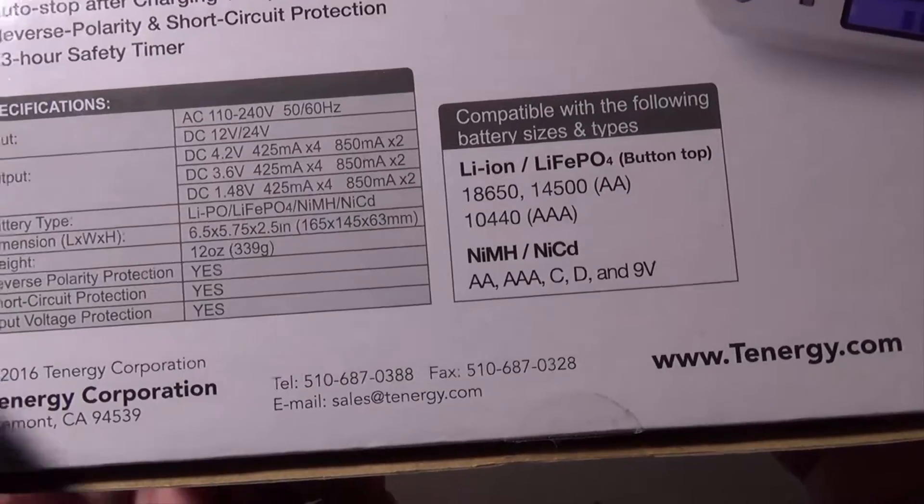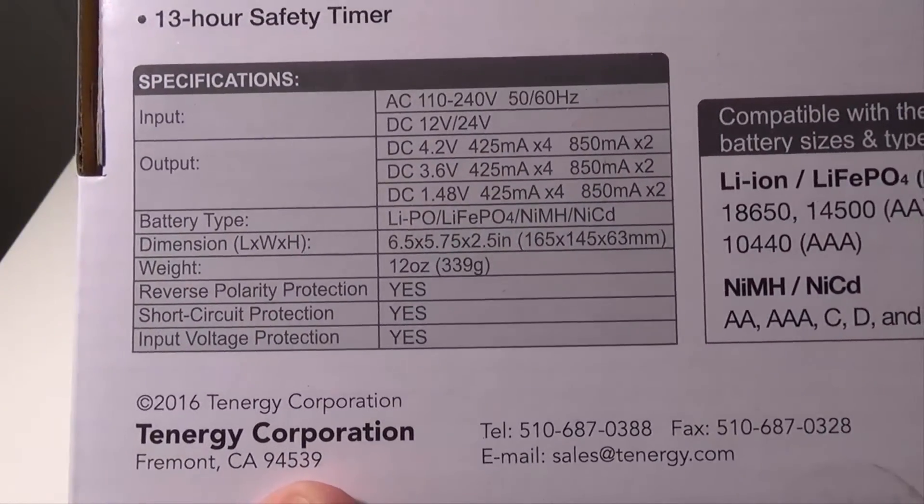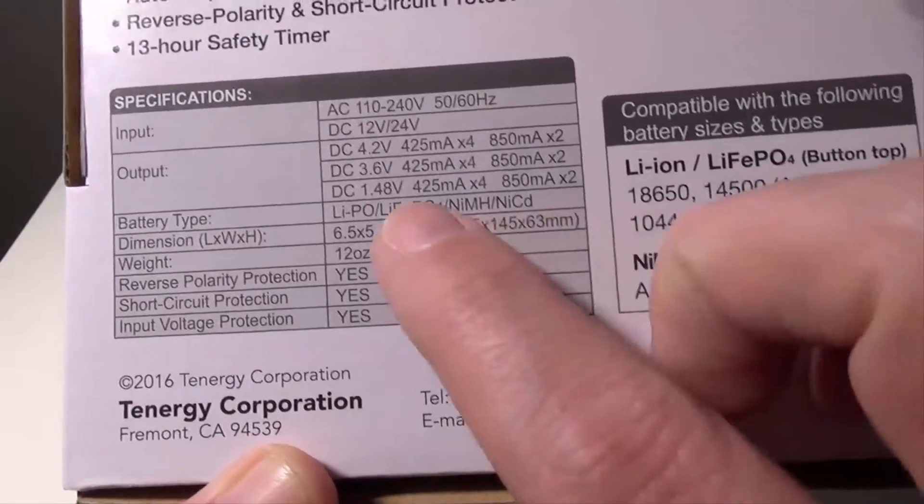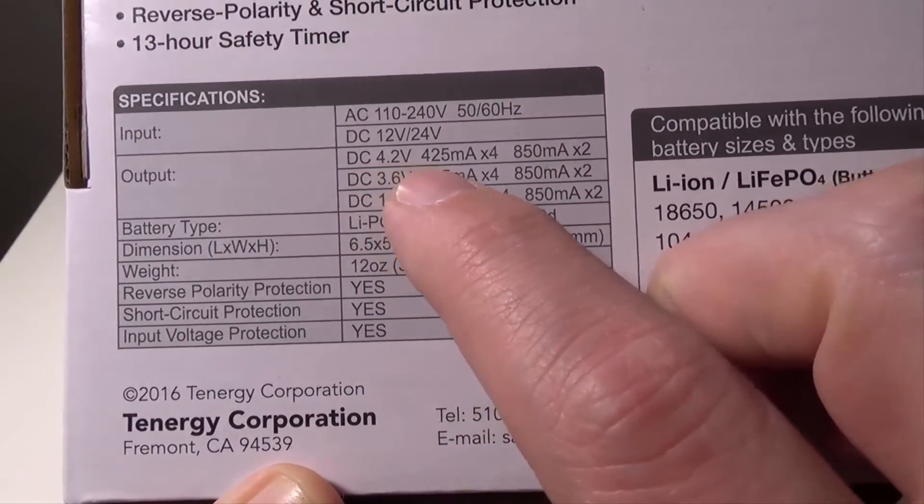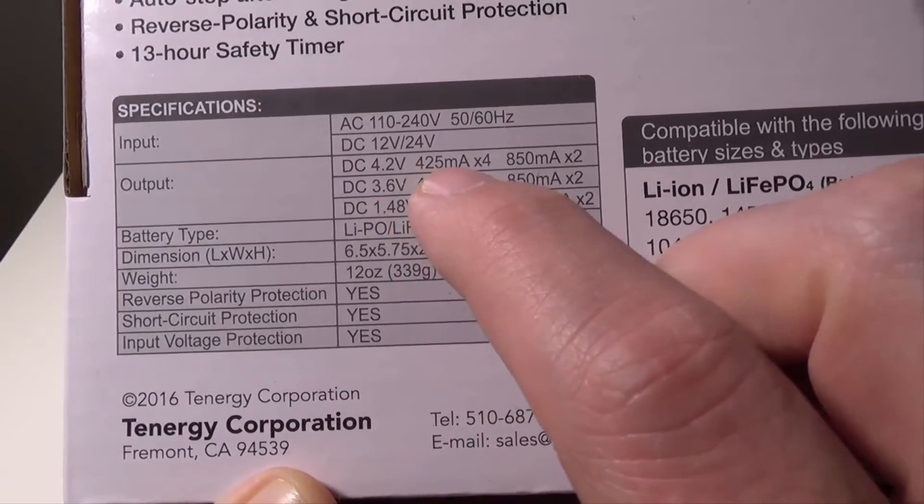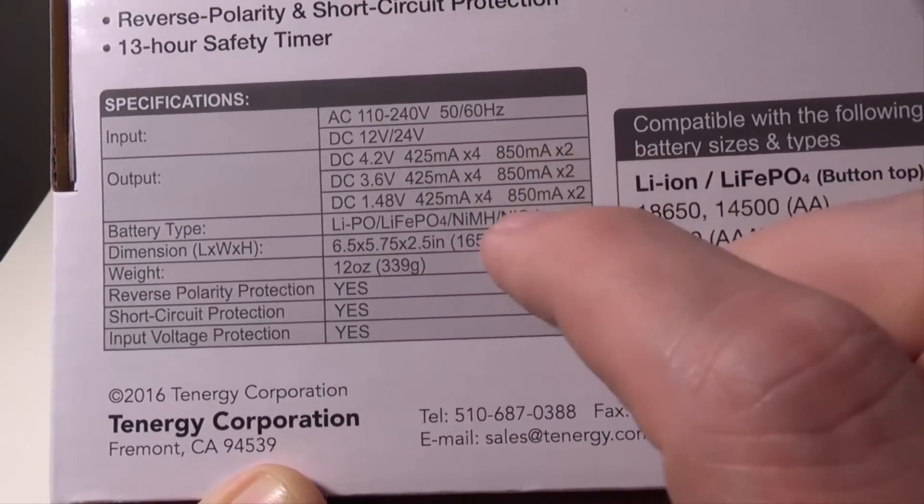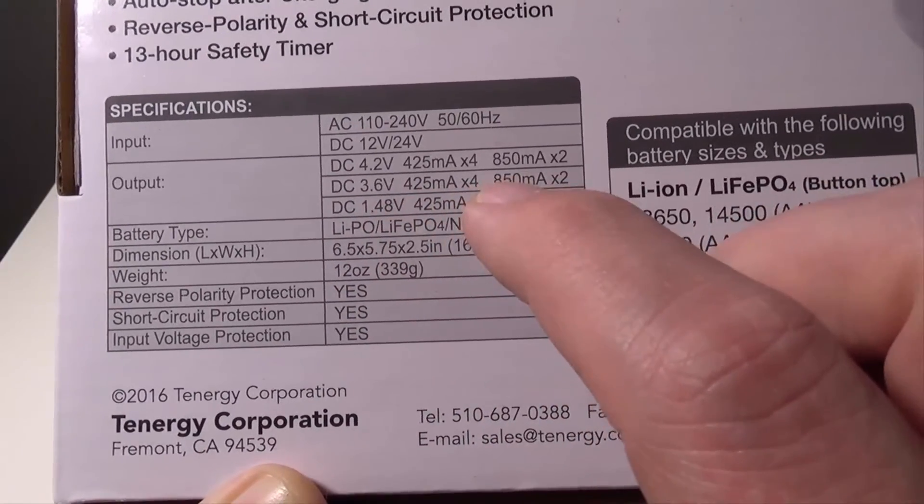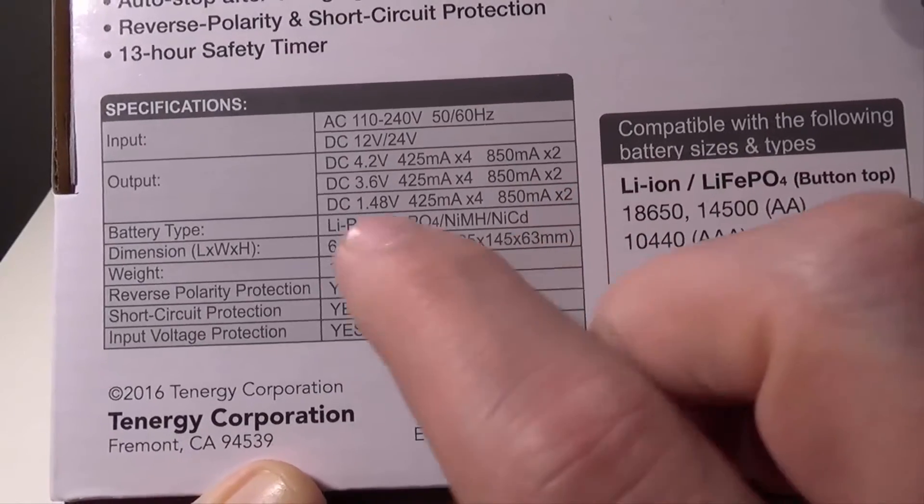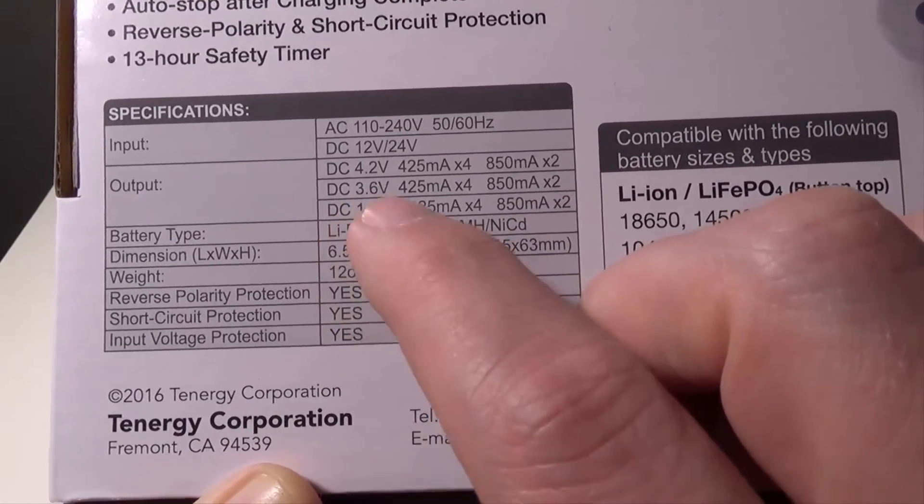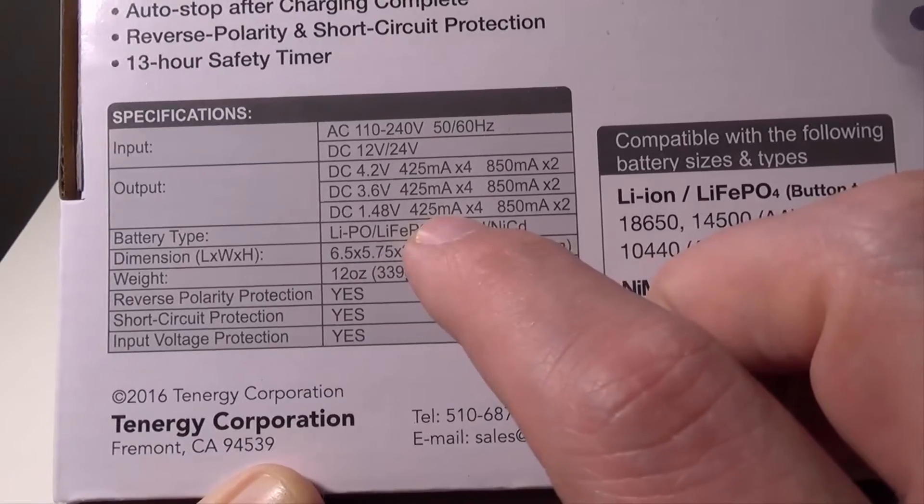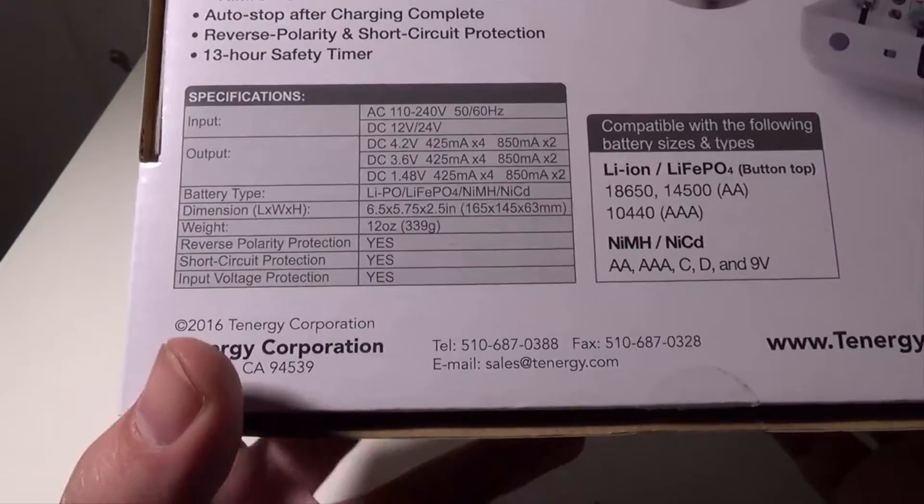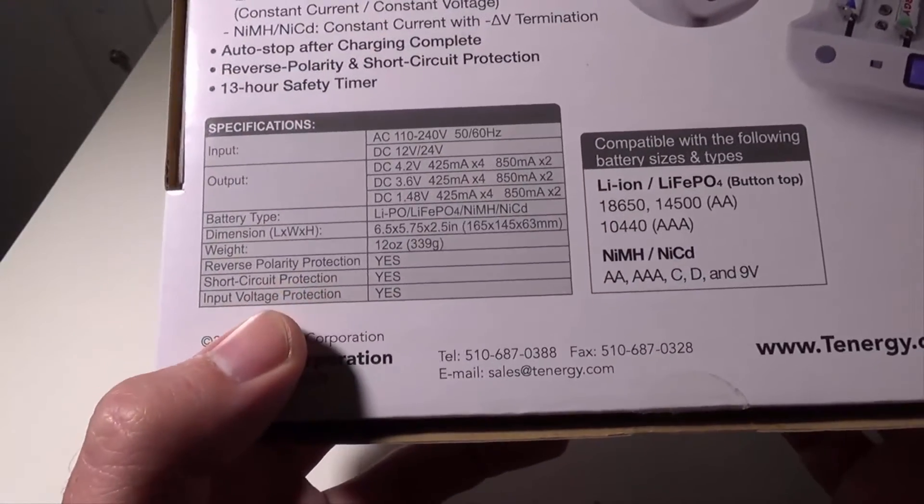Your output is going to be depending on what batteries you're doing, and I will leave this up here if you want to look for your specific battery type. You've got your DC 4.2 volt, 520 milliamps times 4, 850 milliamps times 2. DC 3.6 volt, 425 milliamps times 4, 850 milliamps times 2. And DC 1.48 volts at 425 milliamps times 4 and 850 milliamps times 2.